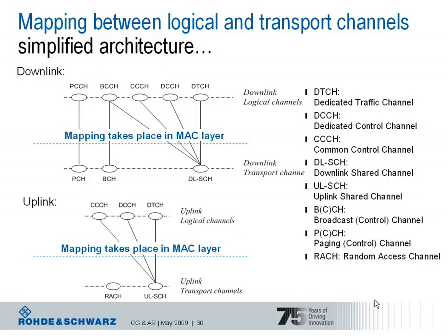This slide shows the mapping between the logical and the transport channels for the downlink and uplink, as defined for LTE. The mapping actually takes place inside the MAC layer — medium access control. The logical channels listed for the downlink include the paging control channel, which is mapped onto the transport channel PCH, the paging channel.